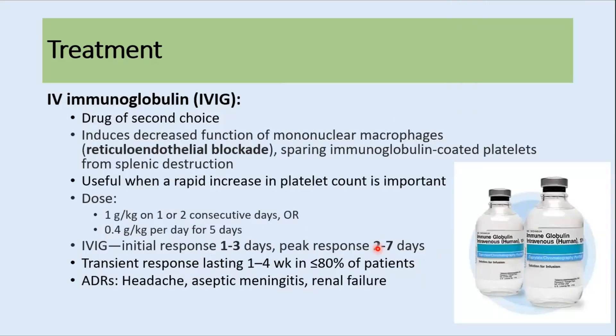IV immunoglobulin is the second-choice drug. It induces decreased function of mononuclear macrophages, preventing splenic destruction of platelets, and is used when there is a need to increase platelets rapidly. The dose is usually 1 g/kg on one or two consecutive days, or 0.4 g/kg daily for five days. Initial response is seen in one to three days and peak response at around two to seven days. Adverse drug reactions associated with IVIG include headache, septic meningitis, and renal failure, so it should be used cautiously.